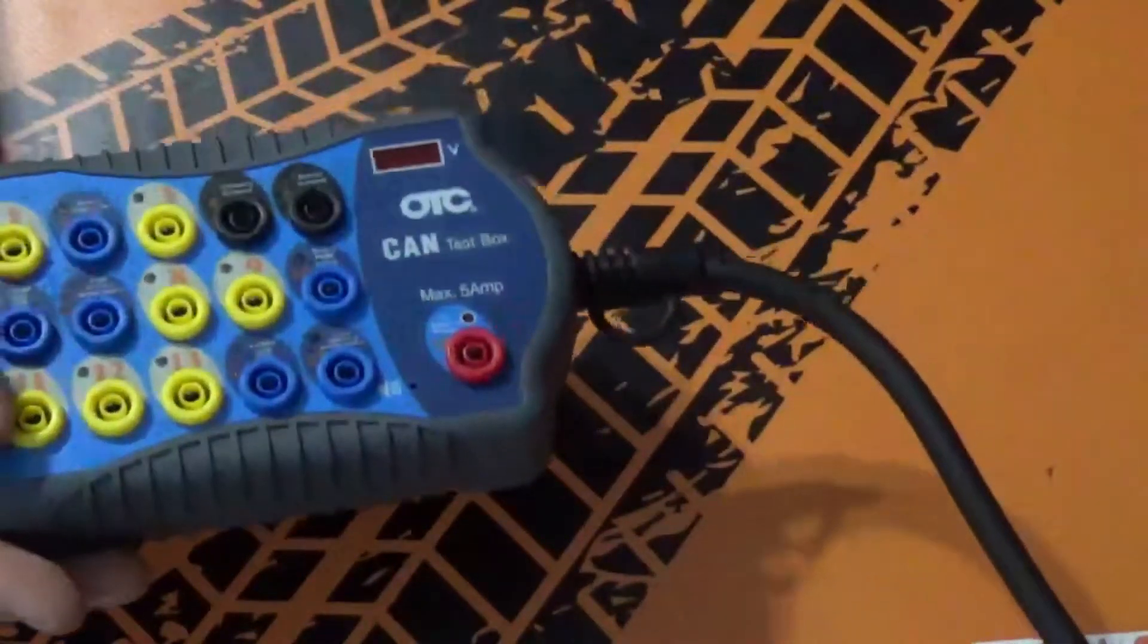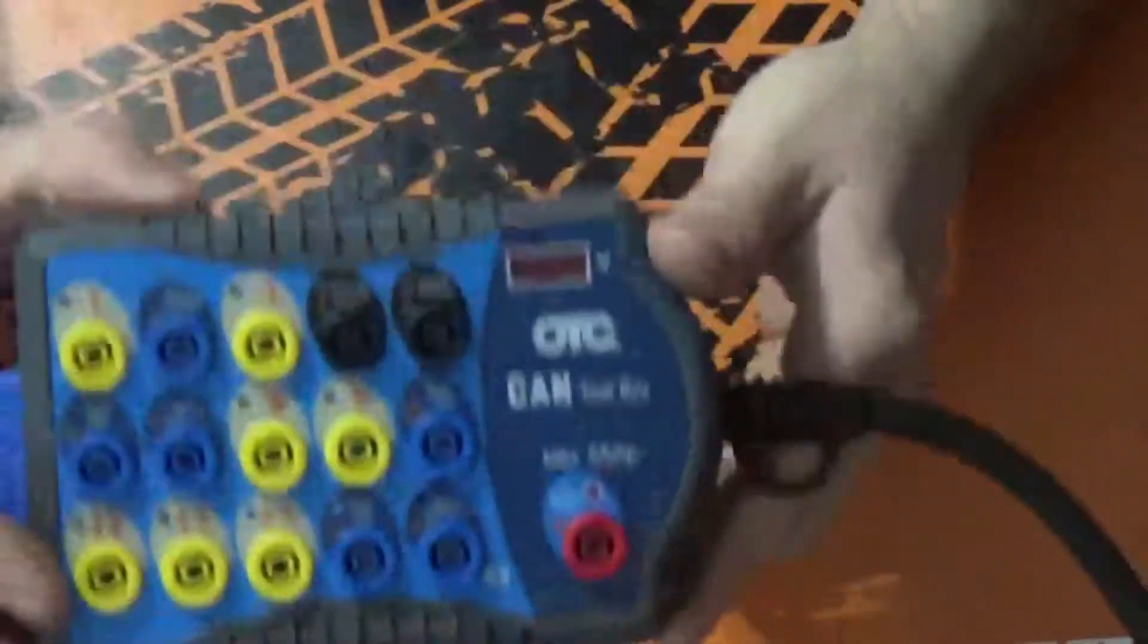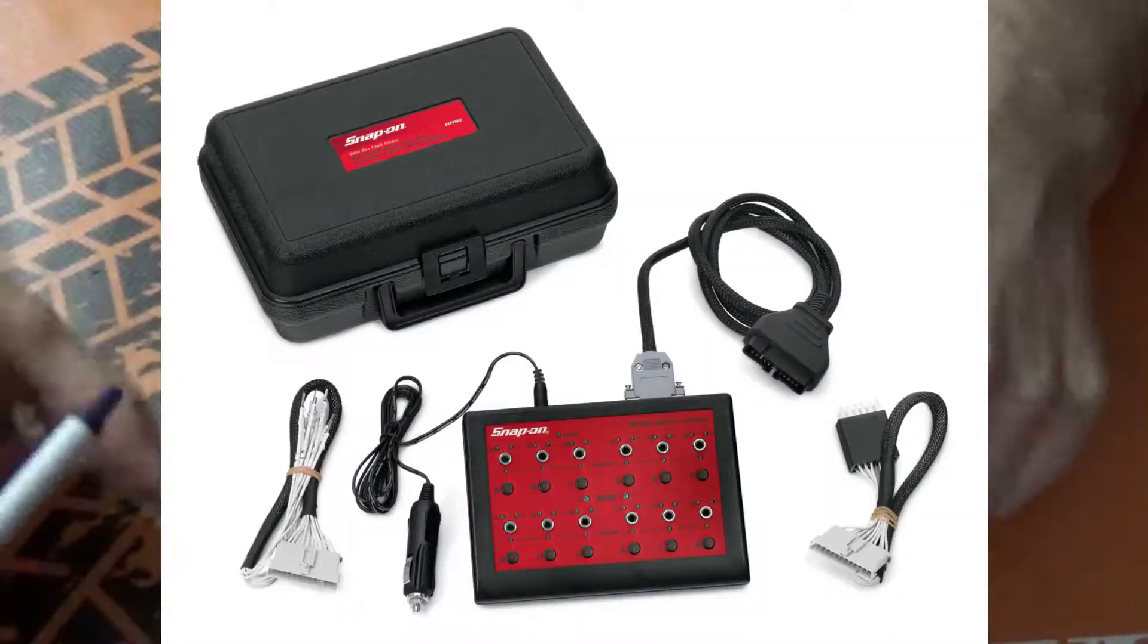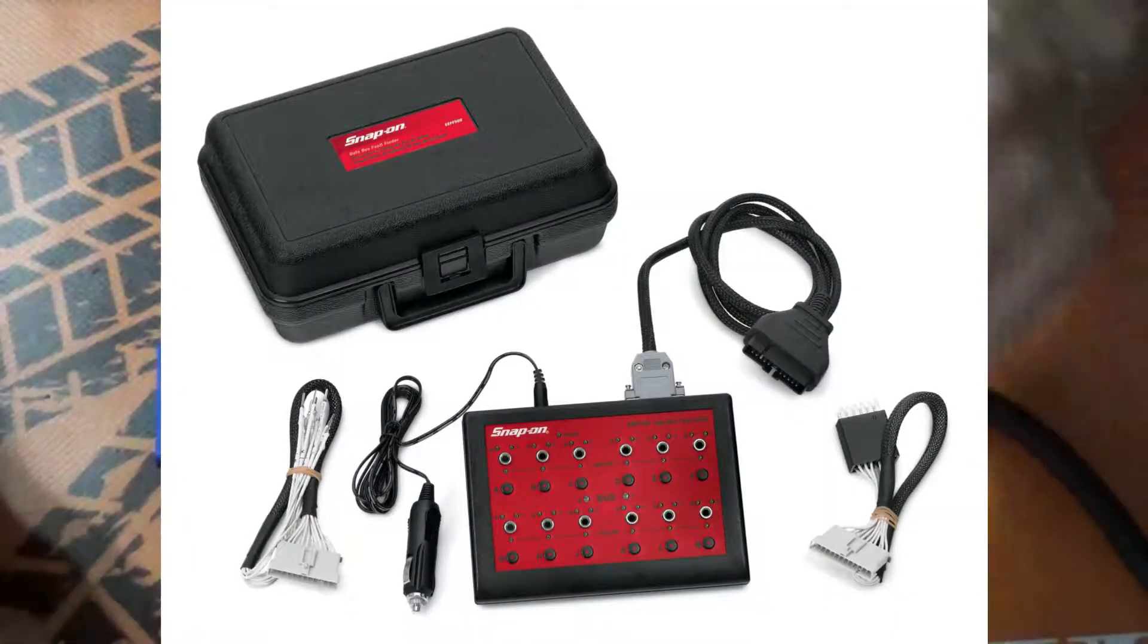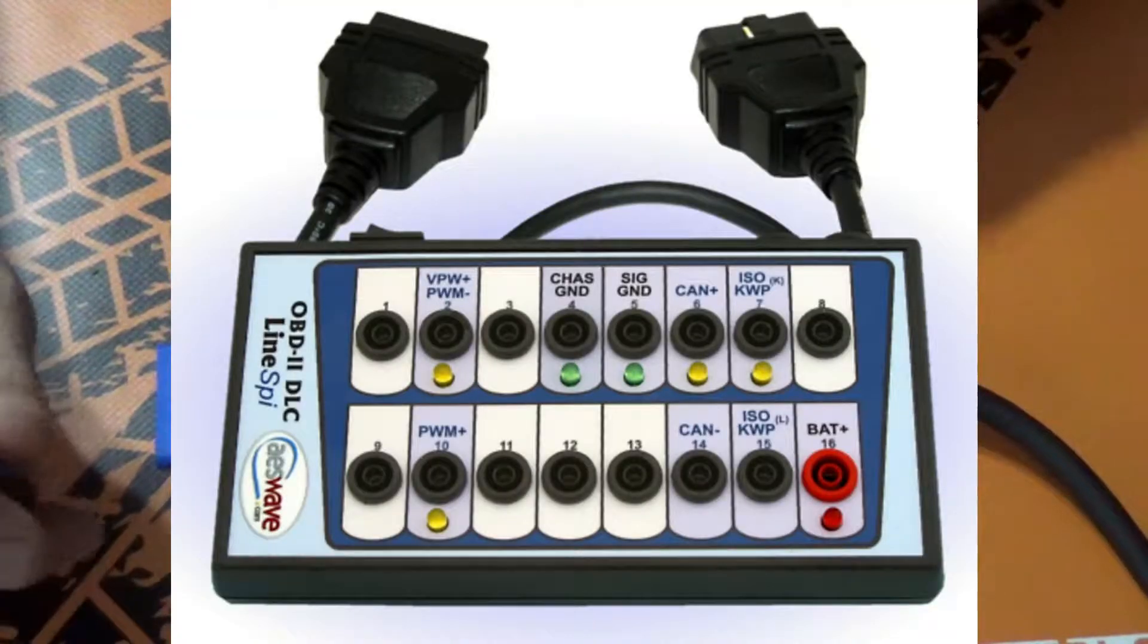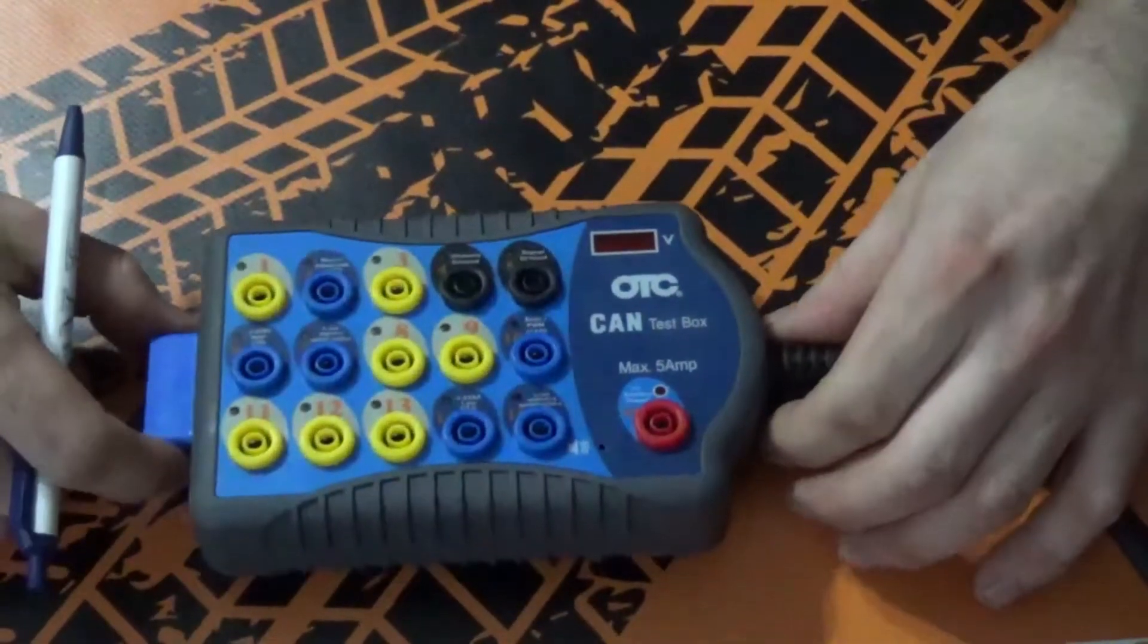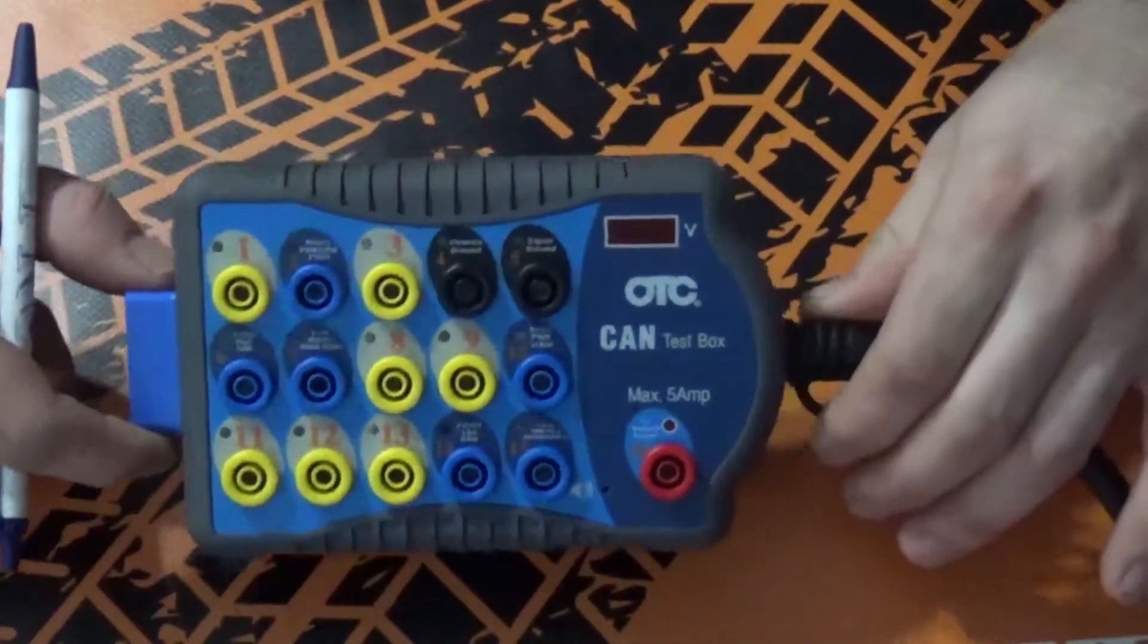Now the companies that make these boxes, they vary. You have, if I'm not mistaken, you have OTC of course. You also have Snap-on and Blue Point. You also have Mac Tools. You also have AES Wave and you have Pico. And those are more or less the top brands that actually make these.